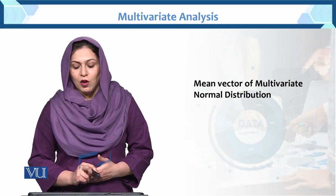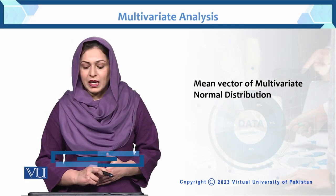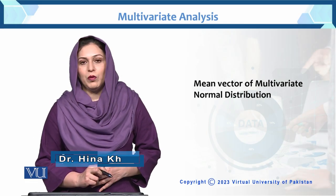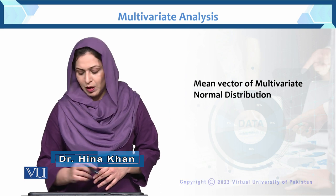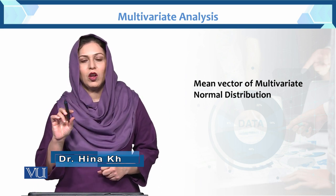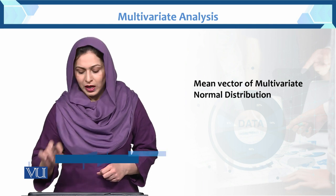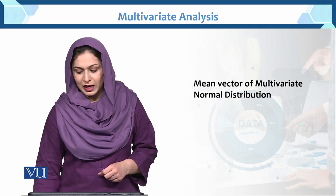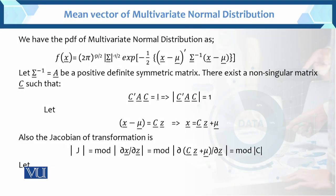In this topic, we are discussing the mean vector of multivariate normal distribution. Previous lecture mein hamne PDF of multivariate normal distribution develop ki hai. Aur is mein ham find karayenge the mean of the multivariate normal distribution. Now we have the PDF of multivariate normal distribution which is equals to this — PDF of multivariate distribution we have developed.